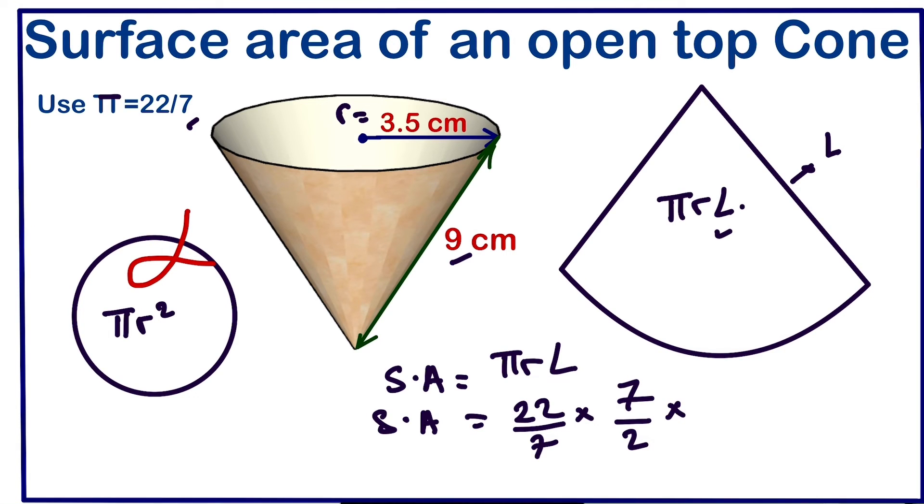We can move further to simplify, and 22 divided by 2 is 11, so this will just give us 99 centimeters squared. So the lateral area is 99 centimeters squared. Thanks for watching, please do subscribe.